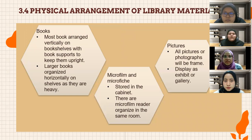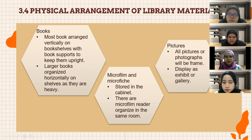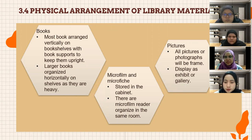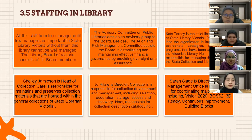Next is the physical arrangement of library materials at State Library Victoria. First, books are stored with book supports. Second, books are organized horizontally on the shelf as they are too heavy to stand vertically. Third, microfilm and microfiche are stored in cabinets, and there is also a microfilm reader organizing room. Lastly, pictures and autographs are framed first and then displayed in cabinets or galleries.